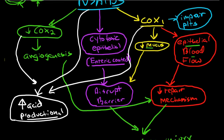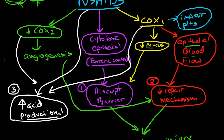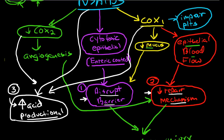By order of priority: disruption of the barrier mucosa is first, loss of epithelial repair mechanisms is second, and increased acid production would be third. If you did nothing but increase acid production, you would not end up with a gastric ulcer because the barrier protection and repair mechanisms would be enough to protect the gastric mucosa from the increased acid. You really have to disrupt the barrier and disrupt the repair mechanisms for there to be injury.